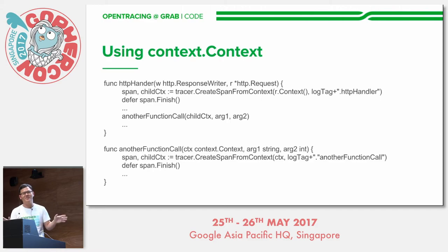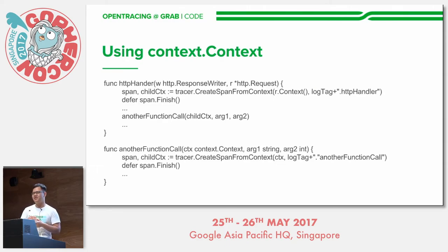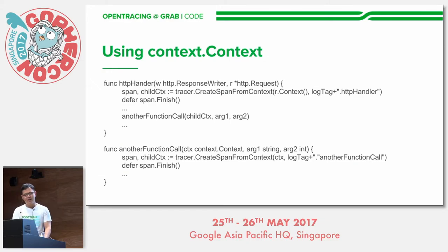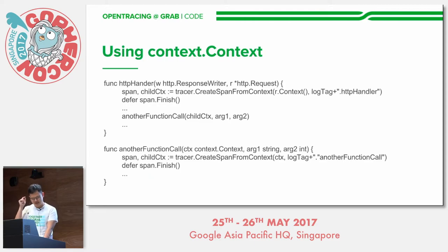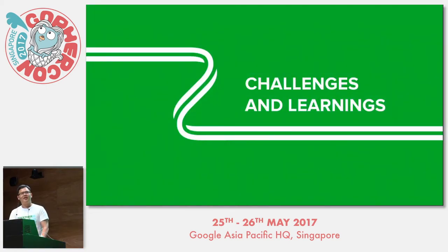In Go, there's no concept of a request store or thread-local, so you use the context.Context struct to propagate tracing information from one function to another. The HTTP request has a context struct embedded in it. We take that context struct, create a span, create a child context from it, and for all subsequent function calls we pass the child context into the function and create spans inside each function.